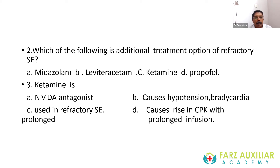The next question: which is true about ketamine? A: Ketamine is an NMDA antagonist. B: It causes hypotension and bradycardia. C: It is used in treatment of refractory seizures. D: It causes rise in CPK with prolonged infusion. Option A is true — ketamine is an anesthetic and NMDA antagonist. Option B is false — it does not cause hypotension and bradycardia but rather tachycardia and hypertension as a cardiac stimulant. Option C is true. Option D is false — it is propofol, not ketamine, that causes rise in CPK with prolonged infusion.